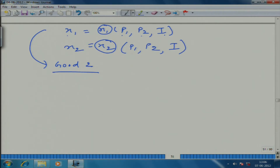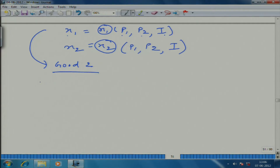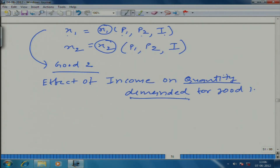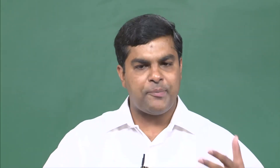First things first — let us start with income: the effect of change in income on the quantity demanded for good 1. This is what we are going to describe. You should know that quantity demanded — how a consumer is buying any of these goods — depends on his optimization problem.